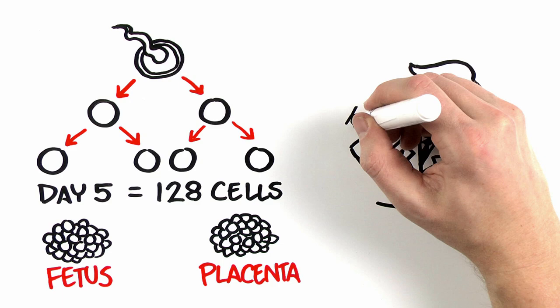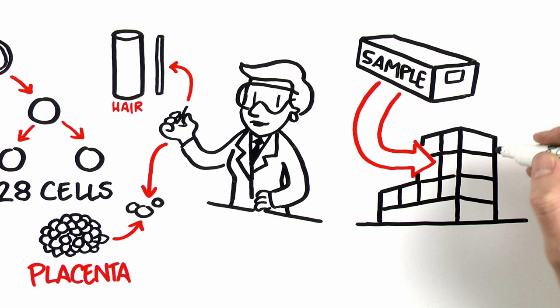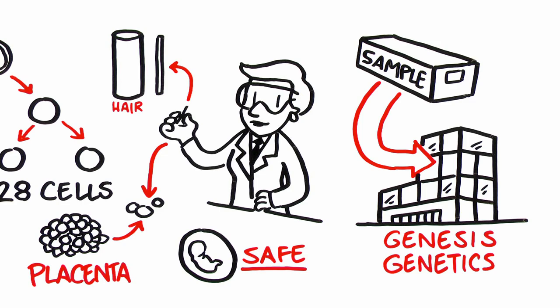An embryologist uses a small tool, one twenty-second the diameter of a human hair, to remove a few cells from the cluster that will become the placenta. That sample is overnighted to a Genesis Genetics lab for testing, while your embryo stays safe in the care of your clinic.